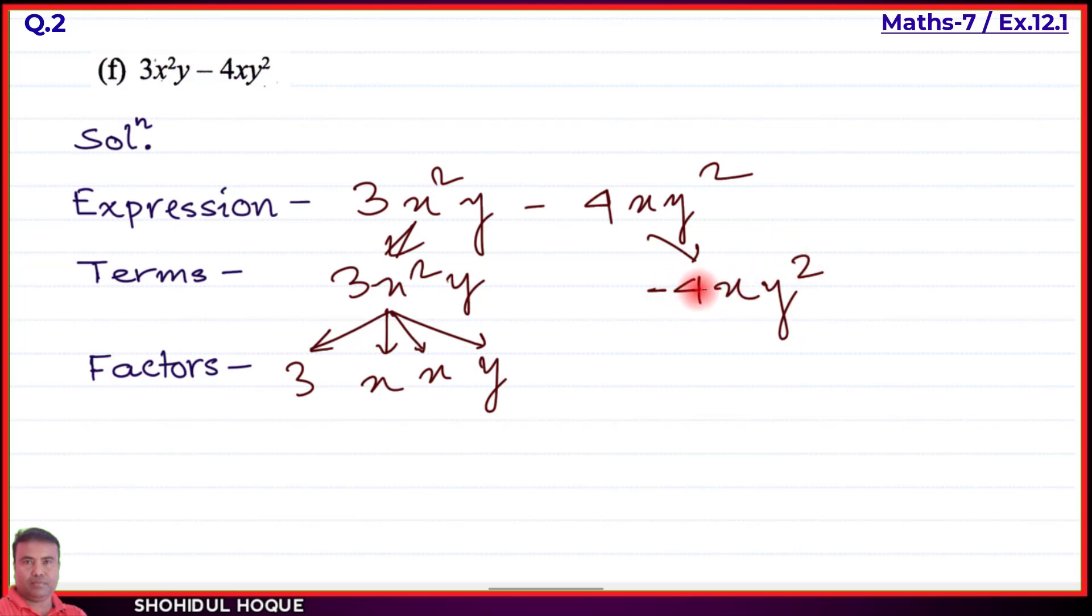Since 4 = 2 × 2, the term -4xy² has five factors total: -2, 2, x, y, and y, shown in five branches.